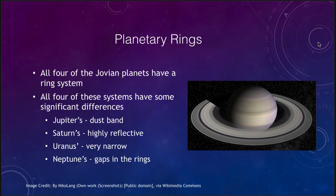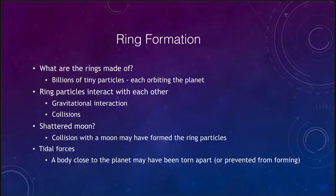Let's look at ring formation. Where do rings come from in the first place? What are the rings made up of? They are billions of tiny particles, each orbiting the planet. You can think of them each as a small moon. Each of these is a very small object — they may only be a few centimeters in size, or up to a meter or so, but they're not gigantic objects by any sense.